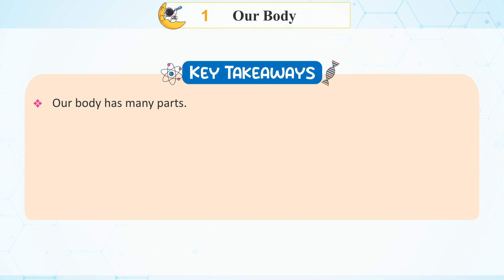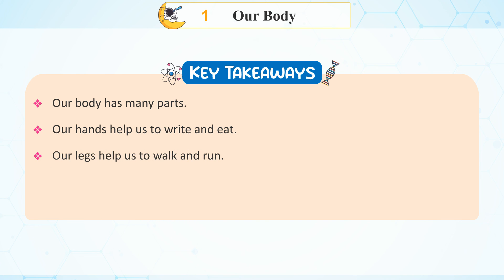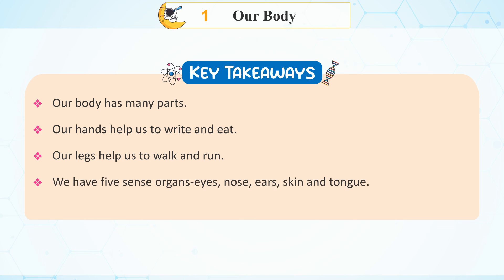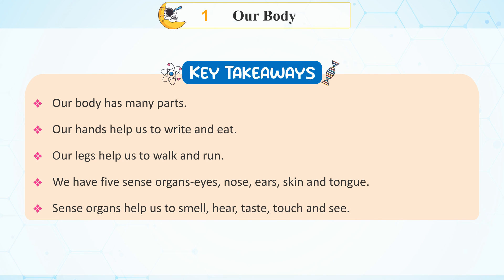Key Takeaway: Our body has many parts. Our hands help us to write and eat. Our legs help us to walk and run. We have five sense organs: eyes, nose, ears, skin, and tongue. Sense organs help us to smell, hear, taste, touch, and see.